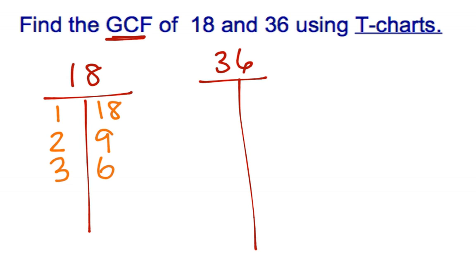Does 4 go into that number? It does not. Does 5 go into that number? It does not. Does 6 go into that number? It does, but we already have it written on this other side. So we know that this is all of the factors that exist for 18.